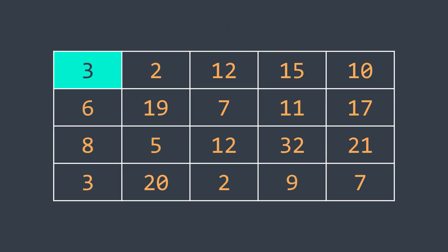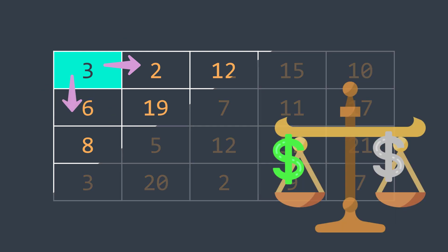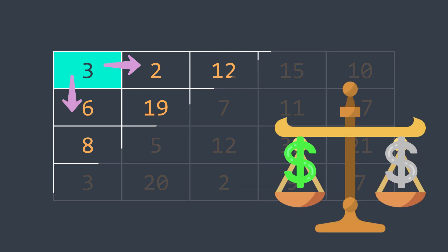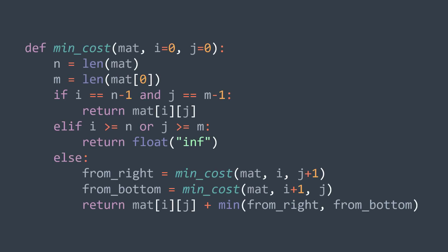When at the top-left cell, we don't know which move will lead us to the minimum cost path — should we move right or down? The idea is to get the minimum cost when we start from the cell to the right, and the minimum cost when we start from the cell below, take the minimum of the two, add to it the cost of the current cell, and that gives us the minimum cost. But to get those minimum costs, we also need to do the same thing recursively.